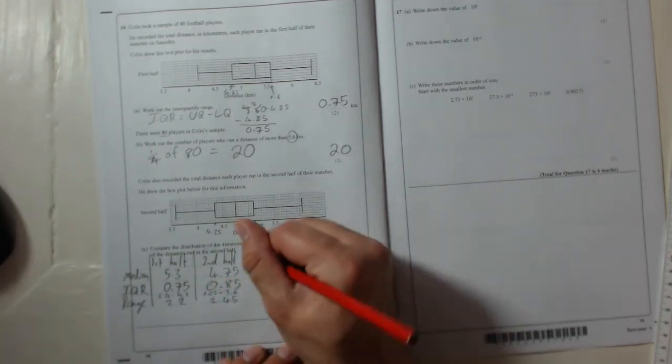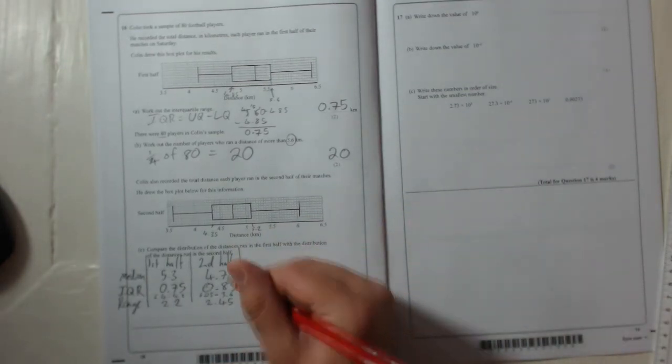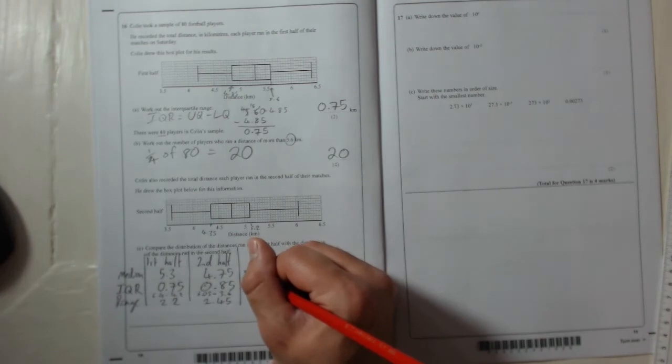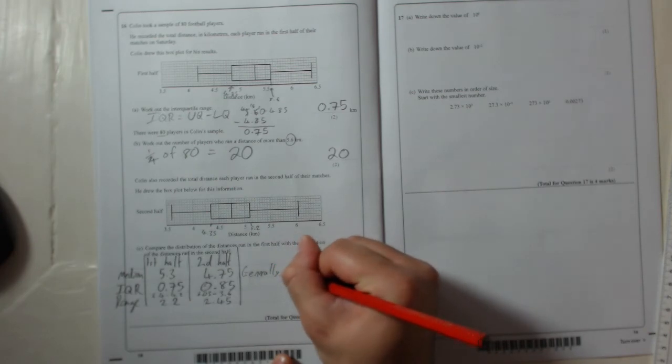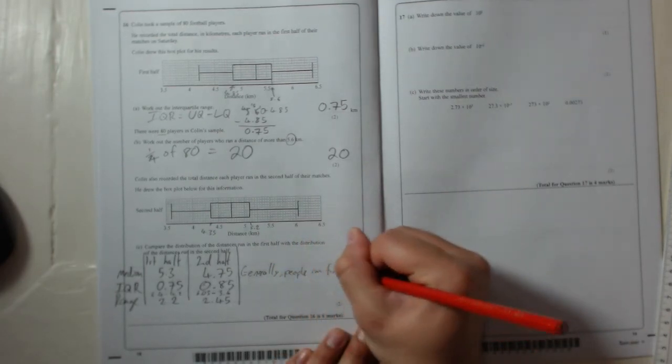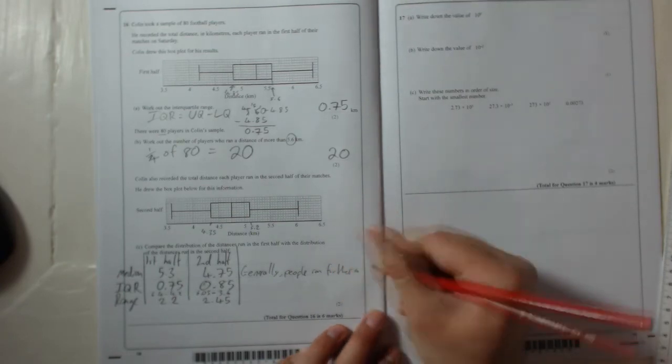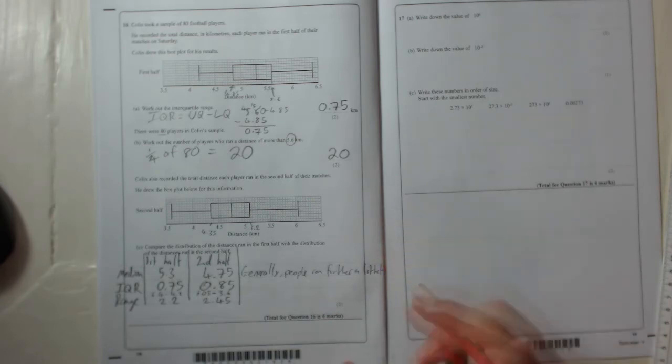Okay, so let's have a look at what kind of comments we can make. The median is lower in the second half, so you can say: So generally people ran further in first half. Okay, so generally people ran further in the first half because their median in the first half is 5.3 and in the second half it is 4.75.